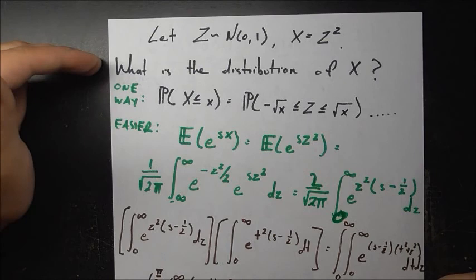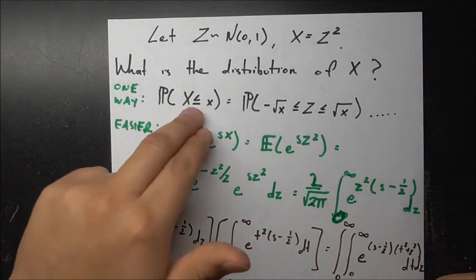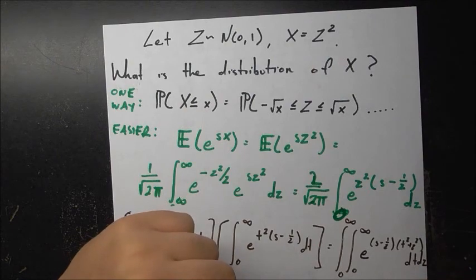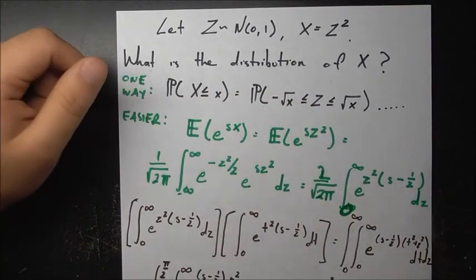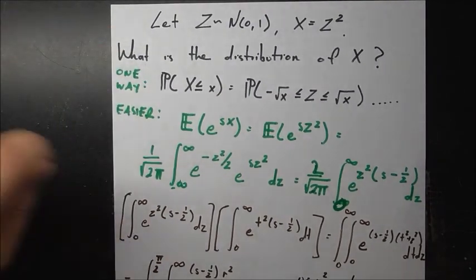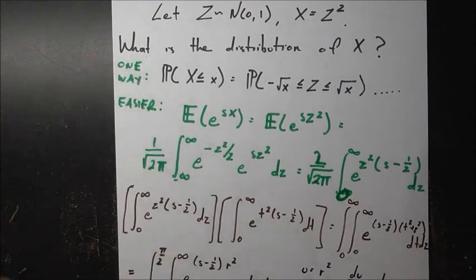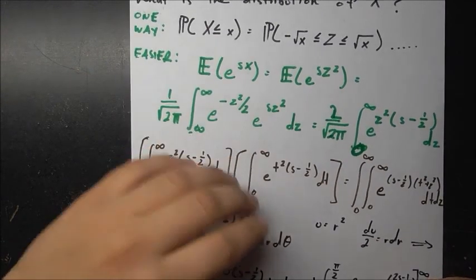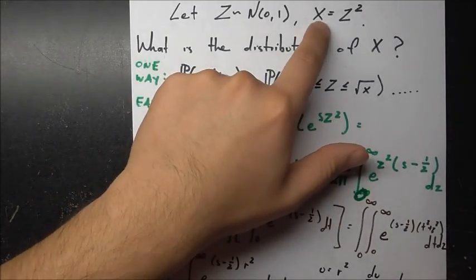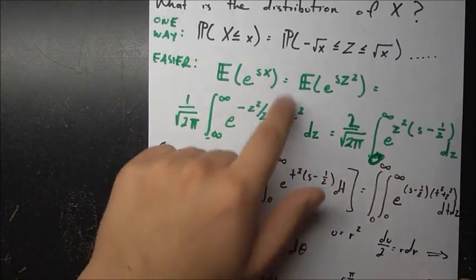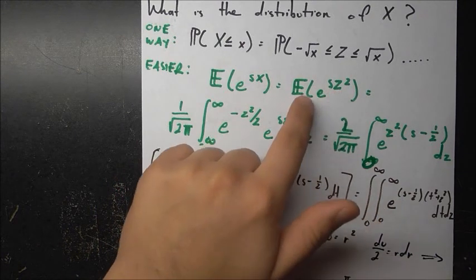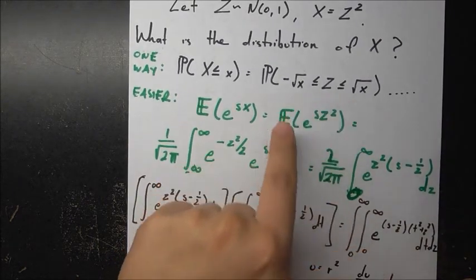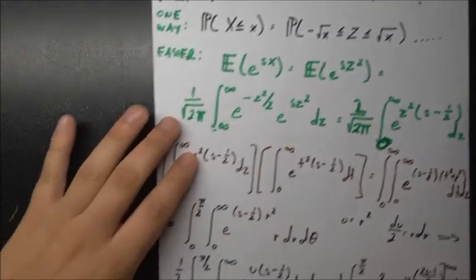We'll find the distribution of x using MGFs, which may be more elegant than the CDF method. We want the MGF of x, which is E[e^(sx)]. Since x = z², we substitute to get E[e^(sz²)]. This is a question about the normal random variable z, and we compute it using the expected value formula: integrating e^(sz²) times the N(0,1) PDF, which is (1/√(2π))·e^(-z²/2), from -∞ to ∞.